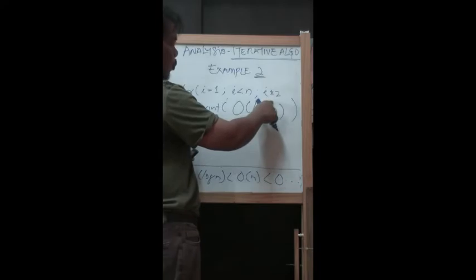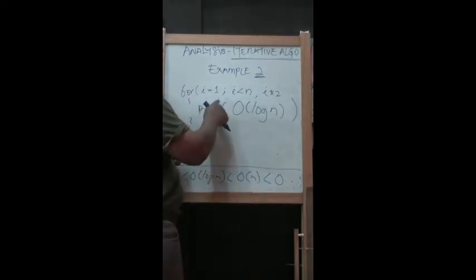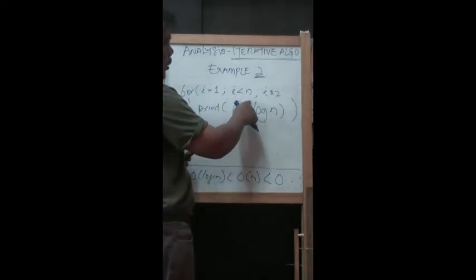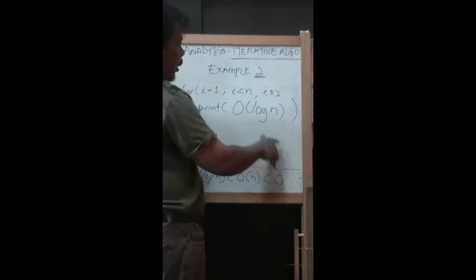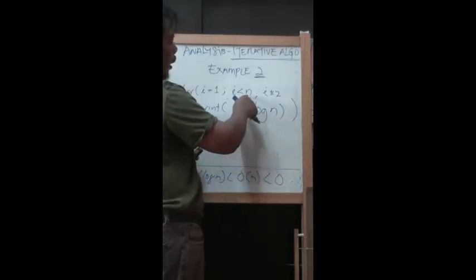If i equals three and three is less than n, let's say it is true, this becomes three times two, which is six, and so on and so forth until n.